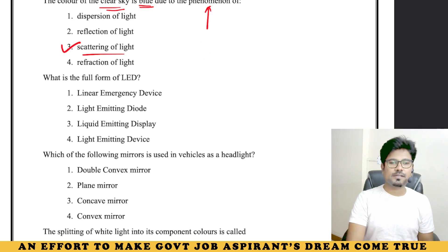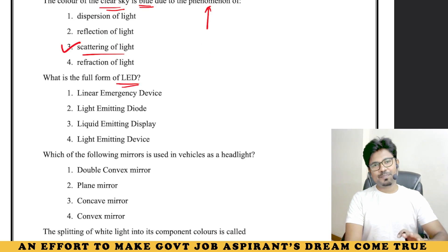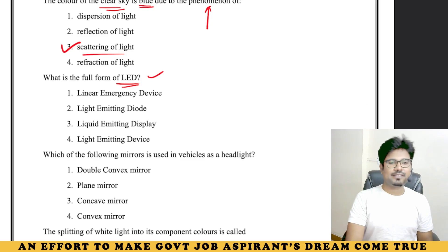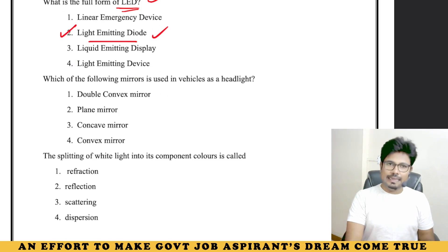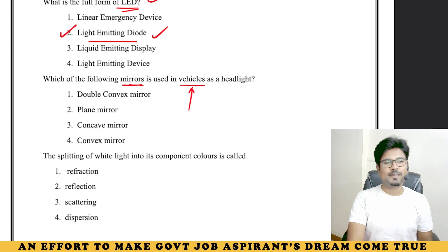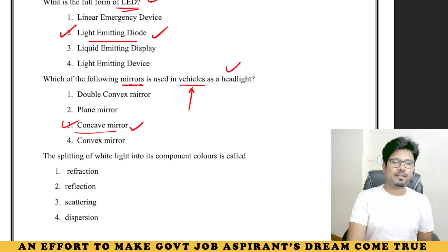This is also from loose-end physics. The full form of LED — though you are a degree student, you can know it from current affairs, or if you are an engineering graduate you might already be aware of this. LED stands for Light Emitting Diode. Next: which of the following mirrors is used in vehicles? This is practical science, not current affairs. Vehicles lo headlight ga use chesedhi it is a concave mirror.